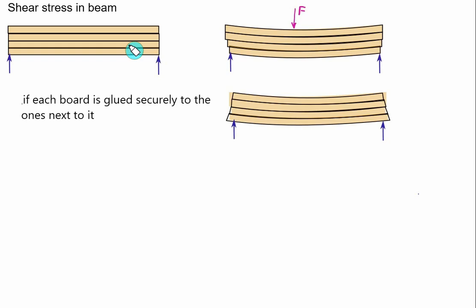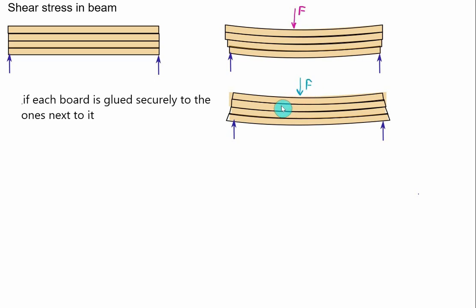Suppose we place glue between each of the thin boards. In that case, there is still a tendency to slide, but the motion is prevented by the glue. This resistance measures the horizontal shear. Similarly, if the boards are secured by bolts and the load is applied, the boards cannot slip — the shearing resistance is now offered by the bolts.